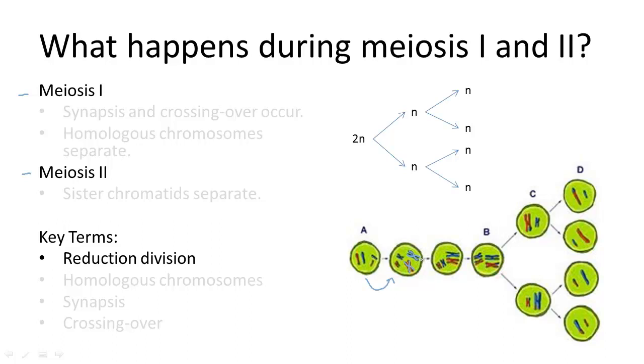Unlike mitosis, however, the sister chromatids do not separate in meiosis I. Instead, the homologous chromosomes separate.